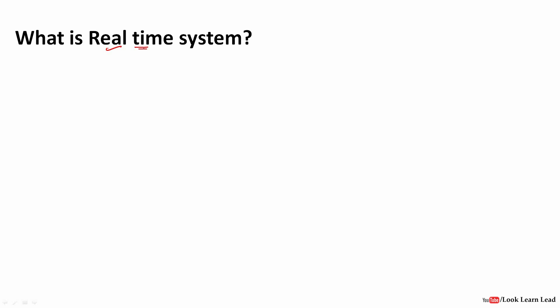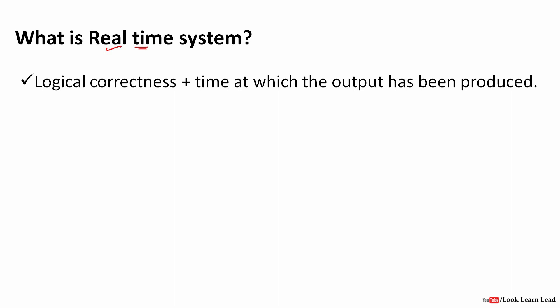The system must meet a specific deadline — the time constraint may also be called a deadline. The correctness of a real-time system depends on logical correctness and the time at which the output is produced. In a normal system, if the output is correct with respect to the input, the system is working fine.